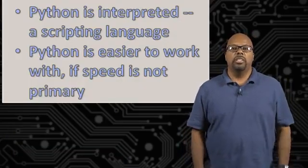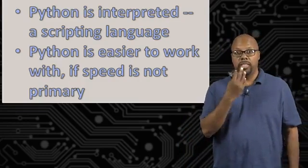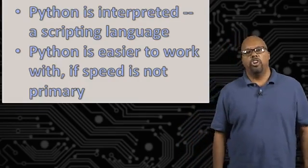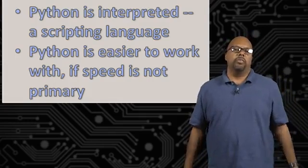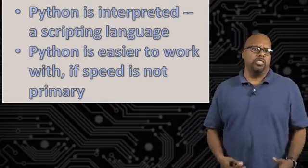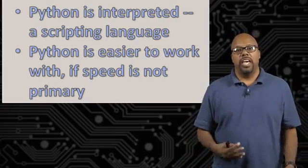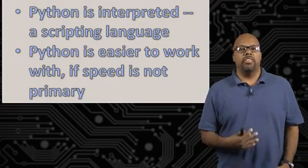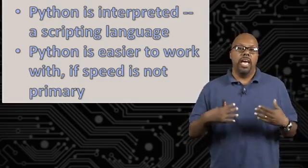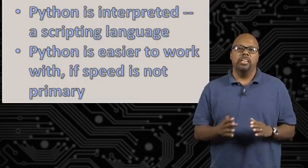Python is an interpreted language — it's also called a scripting language. It's a high-level language and it's easier to work with because it's interpreted. There are certain things the programmer does not have to deal with, like the type of variables — whether it's an integer, a floating point, or a string. You don't have to worry about that in Python. Python figures that out based on how you use the variable, at runtime, while it's executing and doing the interpretation.